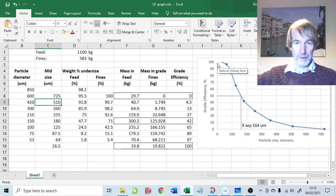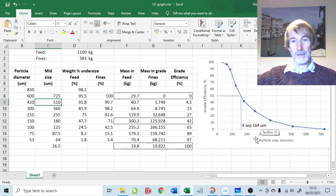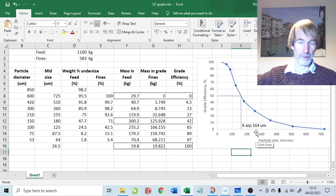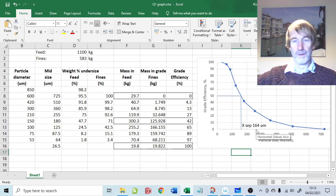The separation size is the 50 percent value. If we look at the 50 value on the grade efficiency curve that comes out to be 164. So conventionally we would say this classifier separates at 164 microns. In other words half the material goes into the fine cut, the other half goes into the coarse cut at 164 microns. It's a funny terminology really because if that's the case then the classifier isn't separating material, it just goes straight through at that size split 50-50.